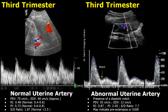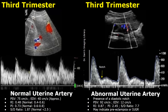The image on the left shows a normal spectral Doppler waveform of the uterine artery during the third trimester, and this image shows an abnormal uterine artery spectral Doppler waveform. A diastolic notch is present. The resistive index is 0.87, which is higher than normal. The pulsatility index is 2.45, which is also abnormal, and the SD ratio is high at 7.7.